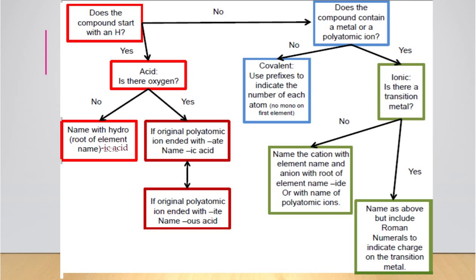At this point we've covered a lot of nomenclature. You can now start looking at food labels and shampoo bottles and recognize the compounds you encounter regularly. One note: nutritional chemists don't always use proper nomenclature, so be careful to use Roman numerals when needed.